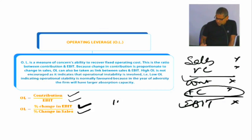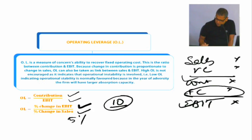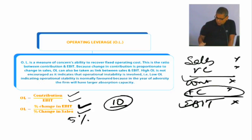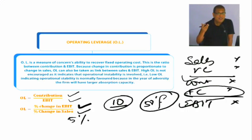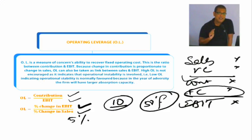मालो किसी का operating leverage 10 है। अब 10 तभी होगा जब contribution जादा होगा, EBIT बहुत कम होगा, fixed cost बहुत जादा होगा। लेकिन अगर किसी का operating leverage 10 है, तो अगर वो sale को 5% भी बढ़ा पाता है, increase कर पाता है, तो 5 into 10 — 50% से उसका EBIT बढ़ जाएगा। And the same will work in the reverse direction also, कि अगर आपका sale 5% से गिर जाएगा, तो high operating leverage की वजए से आपका EBIT 50% से गिर जाएगा.